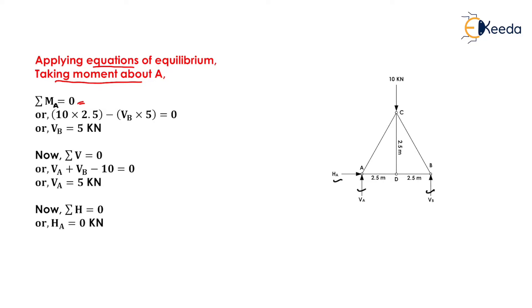Taking the moment about A equals zero: due to the 10 kN force, we get 10 × 2.5 acting in the clockwise direction, taken as positive. The next value is VB × 5, acting in the anti-clockwise direction, taken with a negative sign. By solving this, we get VB equals 5 kilo Newtons.